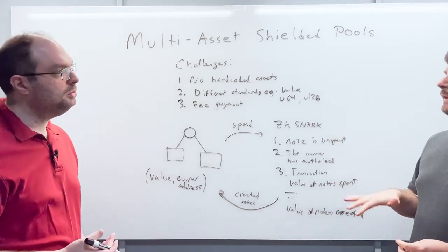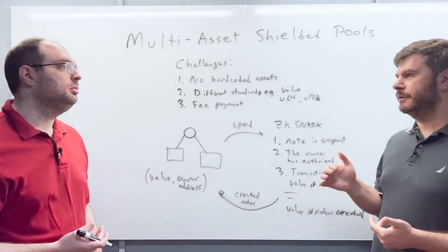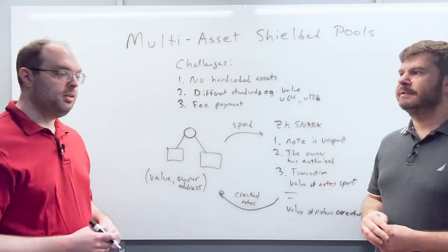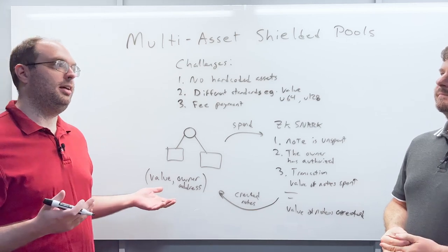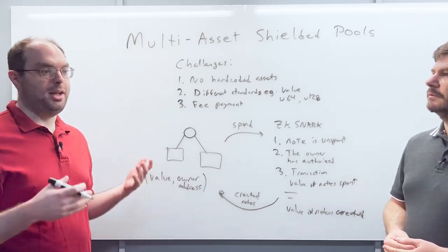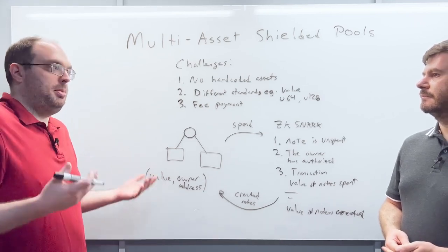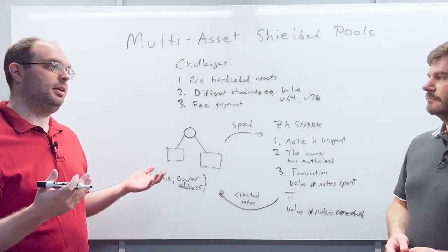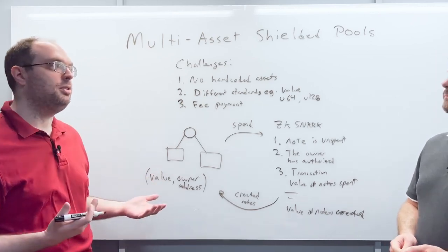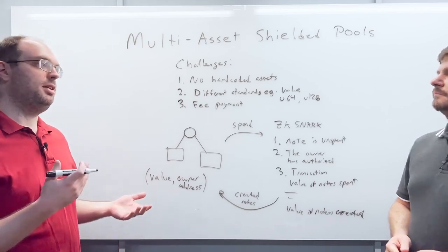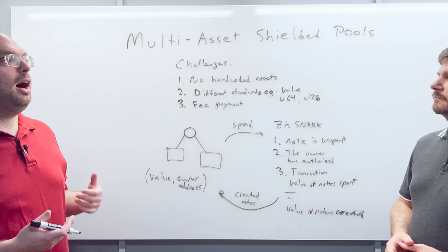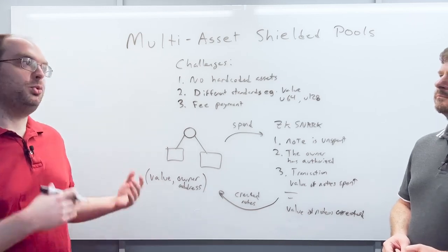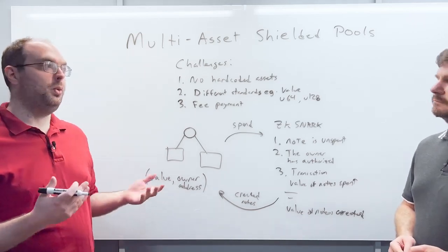In a multi-asset world, do we even need a native token, or can all assets be equal? It comes down to the economics of the chain. The chain might require all fee payments in a native token, or it might allow fees in different asset types with validators having some mechanism to value those tokens. Maybe there's a mechanism where non-native assets can be swapped for native assets inside the shielded pool. But if fee payments require unshielding some of the transferred asset, you might leak privacy.